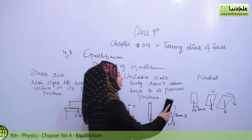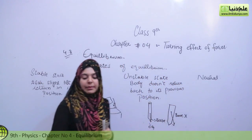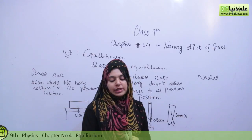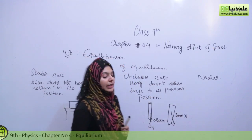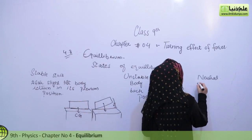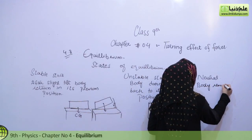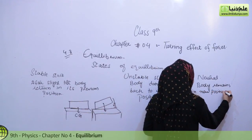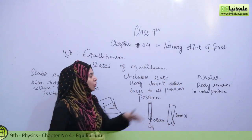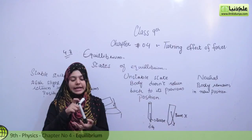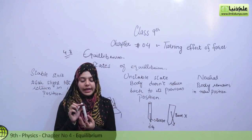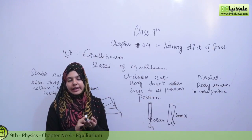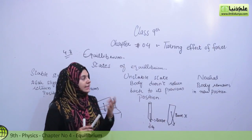The third one is neutral equilibrium. In neutral equilibrium, the body remains in its new position when displaced from its previous position and released. It does not return to its previous position but stays in the new one — this is called the neutral state of equilibrium. For example, if a pencil is lying flat and slightly tilted, it takes a new position lying on the hand.